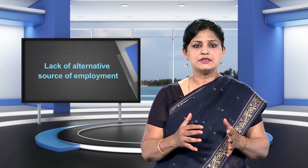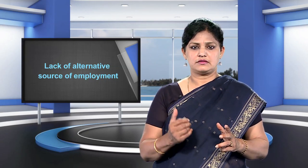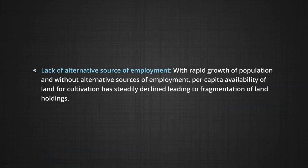The fourth cause is lack of alternative sources of employment. A large section of the rural poor are small farmers. The land they have is less fertile and dependent on monsoons, so their survival depends on subsistence crops and sometimes on livestock. With rapid growth of population and without alternative sources of employment, per capita availability of land for cultivation has steadily declined, leading to fragmentation of land holdings.